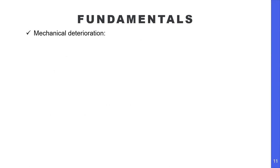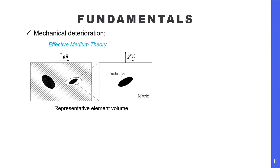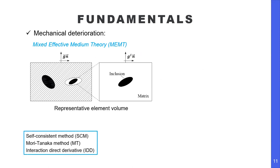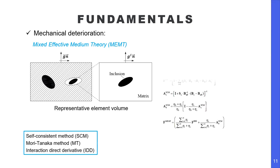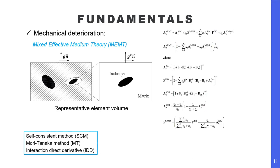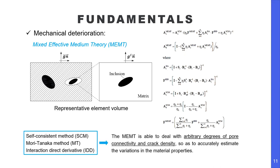Finally, for evaluating mechanical deterioration, I use analytical micro-mechanics. The specific approach I use is based on effective medium theory, which I further expand into a mixed effective medium theory (MEMT) that incorporates advantages of three popular methods: the self-consistent method, the Mori-Tanaka method, and the interaction direct derivative method. By doing so, the MEMT method is able to deal with arbitrary degrees of pore connectivity and crack density so as to accurately estimate variations in material properties.